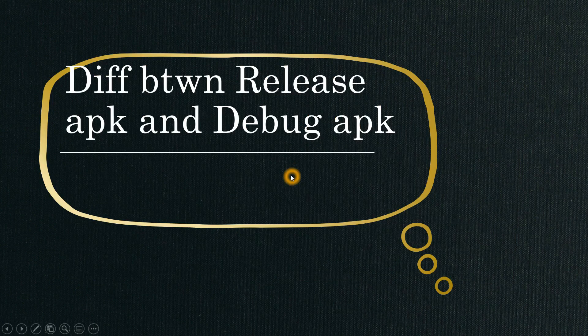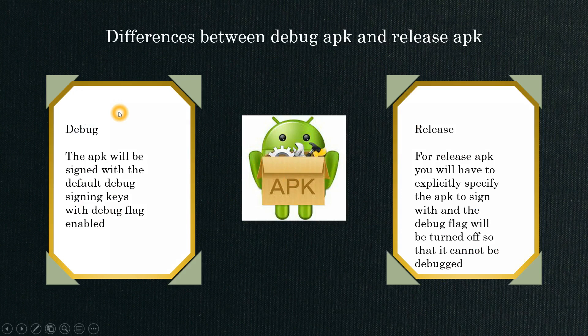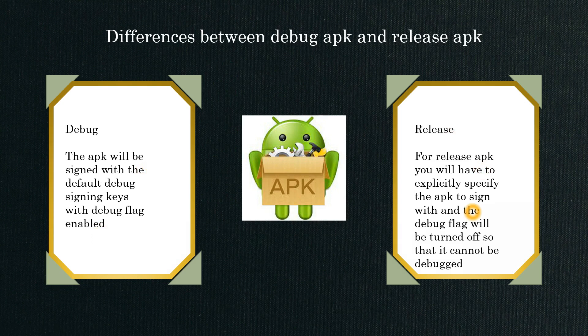Next, we'll see the difference between a release APK and a debug APK. A debug APK will be signed with the default debug signing keys, with the debug flag enabled by default. Whereas a release APK you will have to explicitly go ahead and sign before releasing it to the customer. As a developer, I develop a debug APK because I don't need to sign it with platform keys — I'm writing it purely for testing purposes.